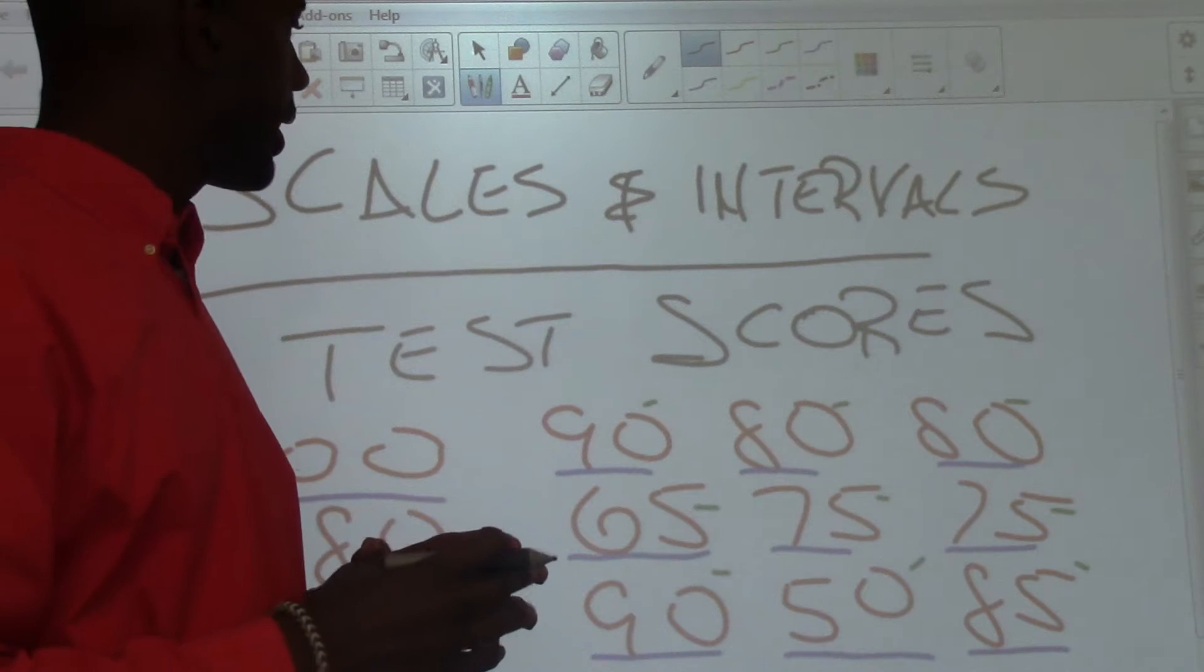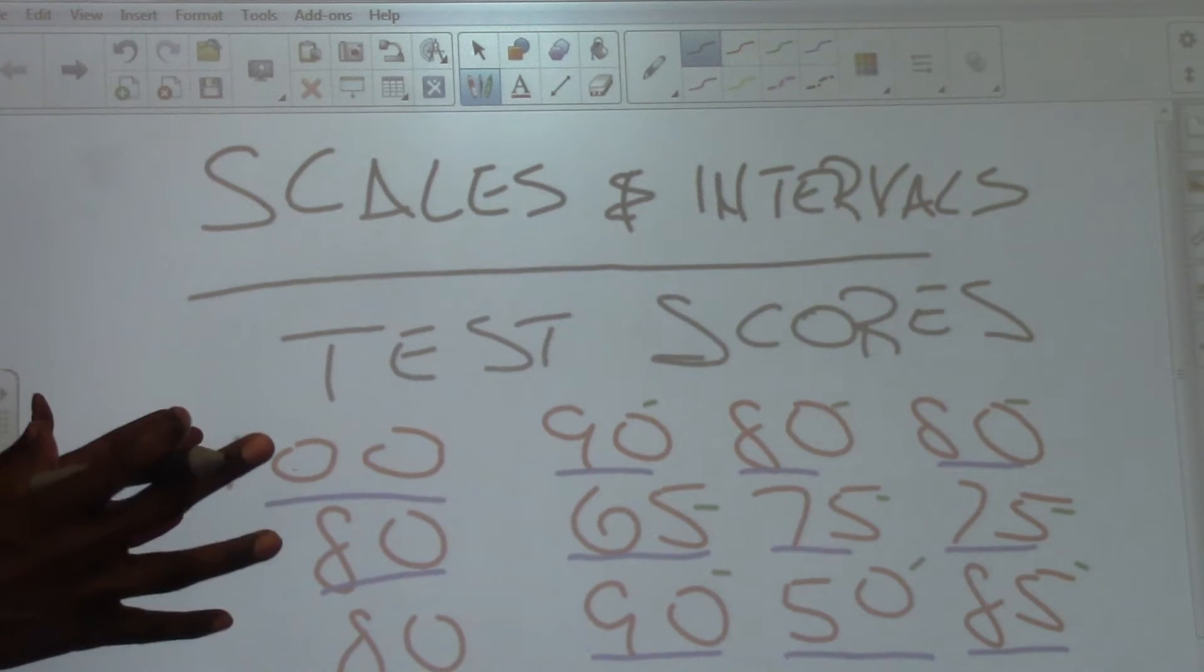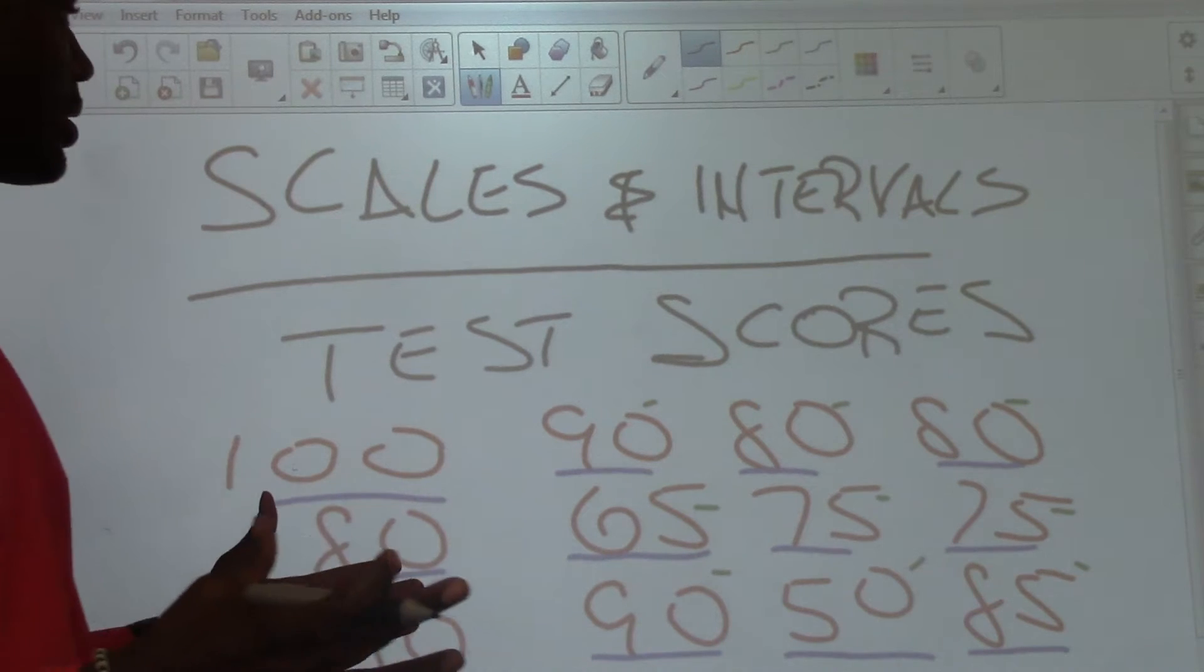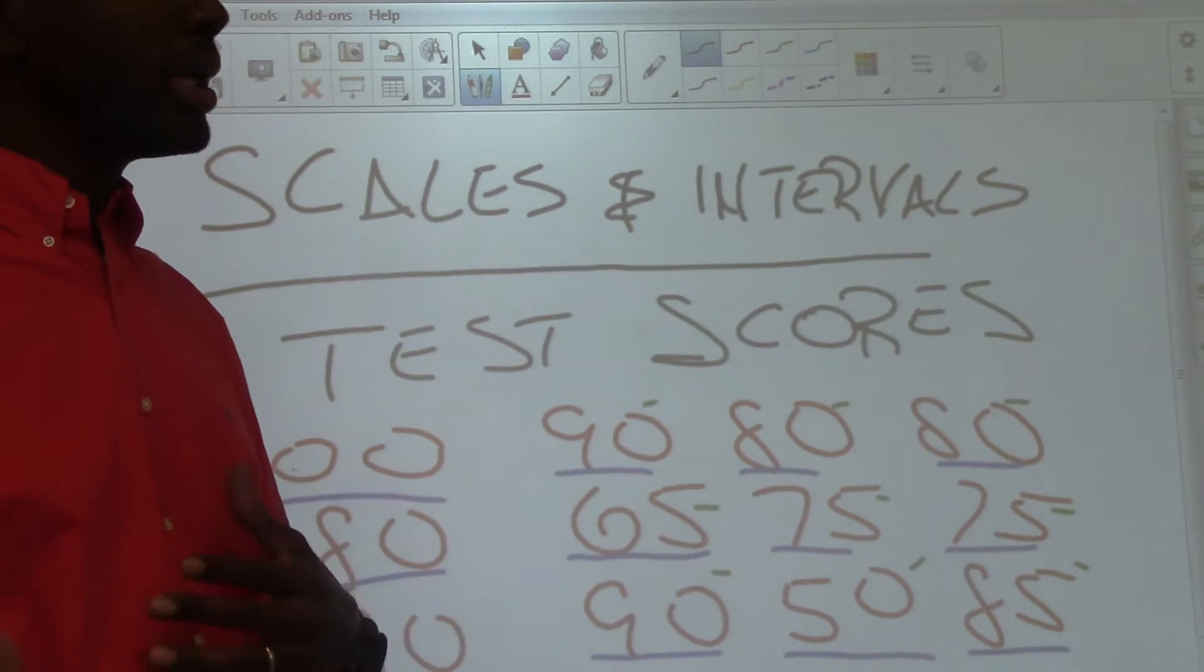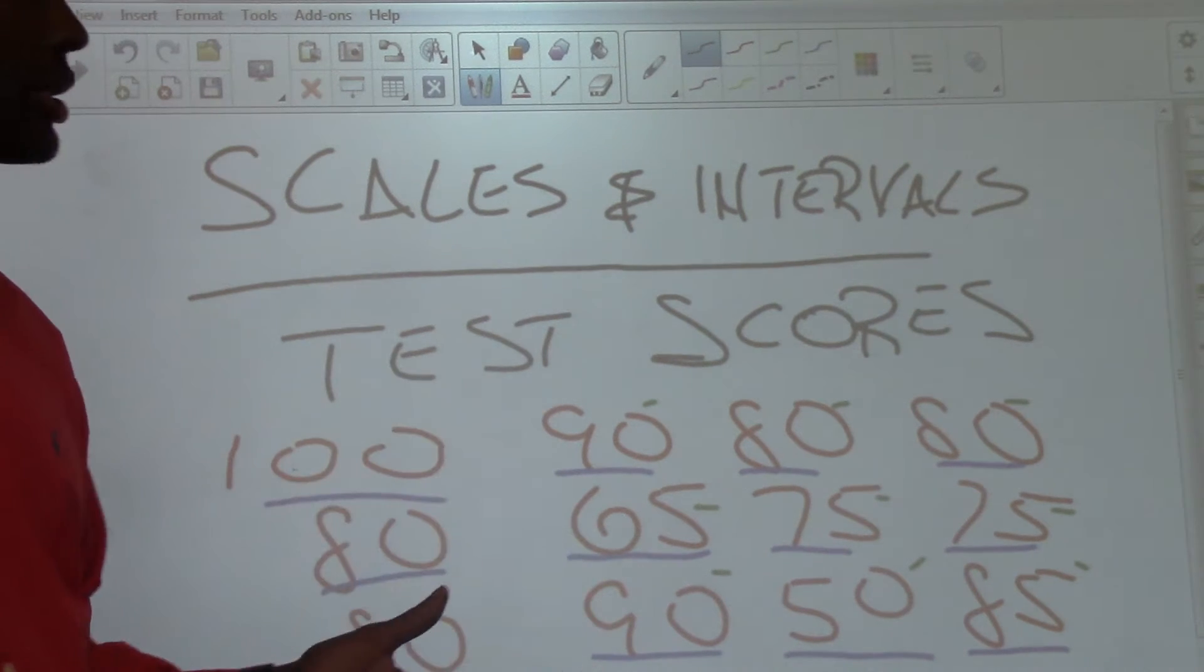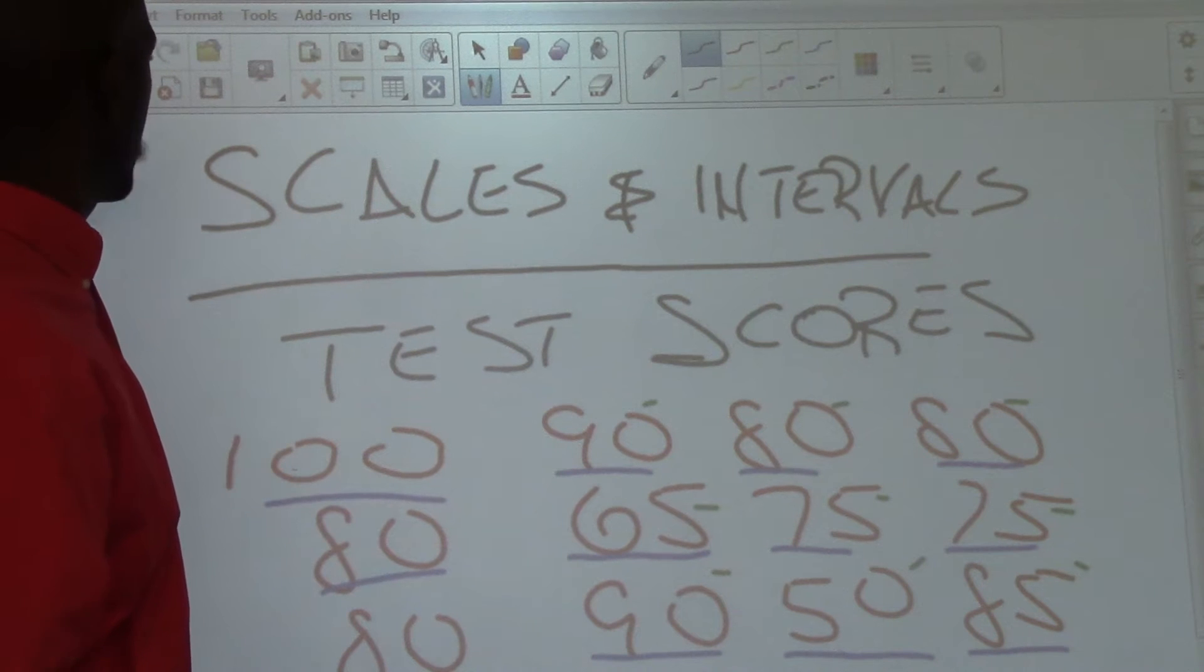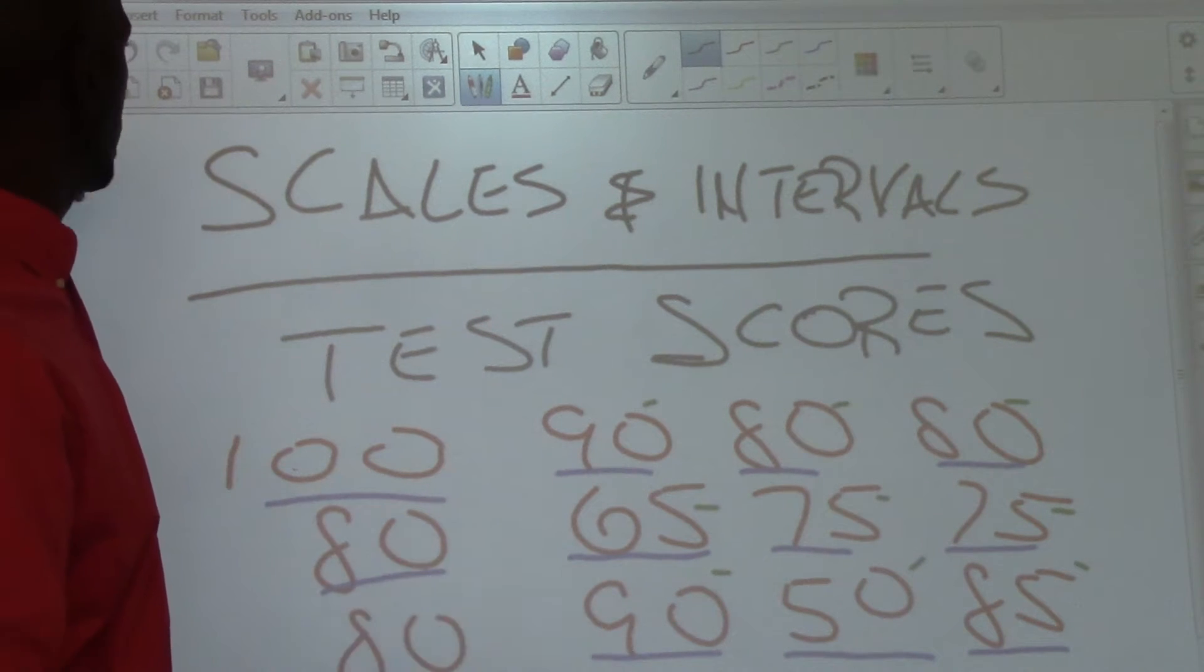The interval is going to be the amount of space in between each scale. It has to be the exact same amount of space for each scale in order to create an interval. So what we're going to do is we're going to create an interval, a scale and interval table.